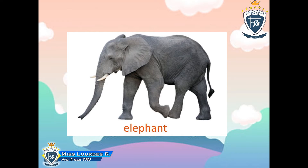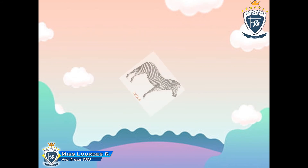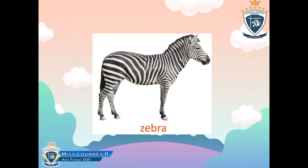Now let's look at the next picture. What is it? It is a zebra. It is a zebra. Repeat after me: zebra. One more time: zebra. Very good!